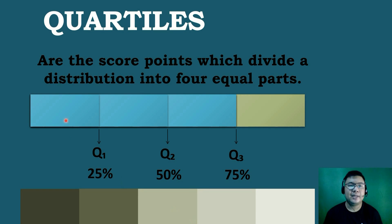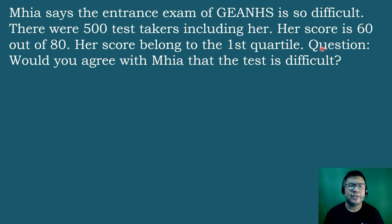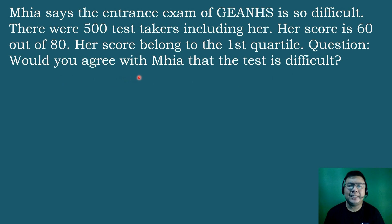Let's look at an example. Mia says the entrance exam of General Emilio Aguinaldo National High School is so difficult. There were 500 test takers, including her. Her score is 60 out of 80, and her score belongs to the 1st quartile. Question: would you agree with Mia that the test is difficult?